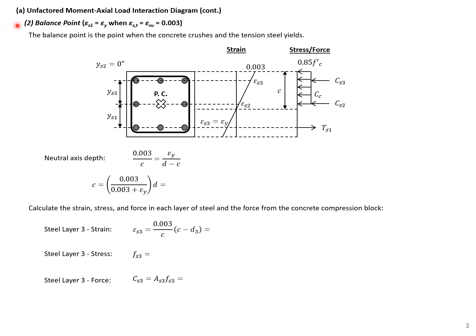The next point is the balance point, where our steel reaches the compression-controlled strain limit and the concrete strain equals 0.003. We have 0.003 at the top fiber and tensile strain equal to the yield strain epsilon_y at the bottom. Using a linear strain profile (plane sections remain plane), the neutral axis depth c equals 0.003 divided by (0.003 plus epsilon_y), times d = 12 inches, giving c = 7.1 inches.